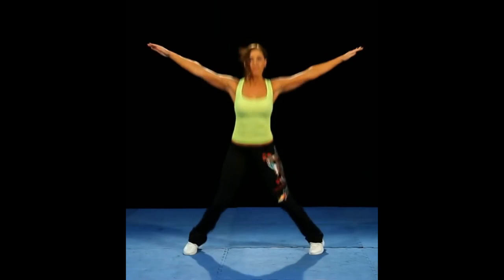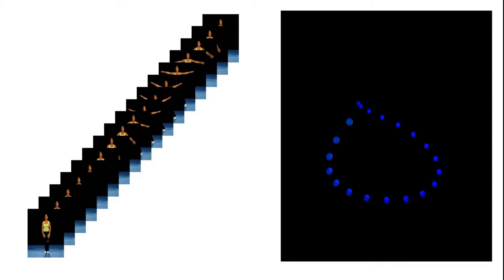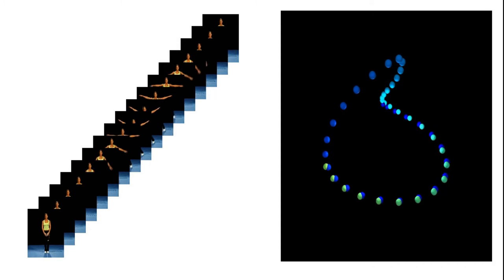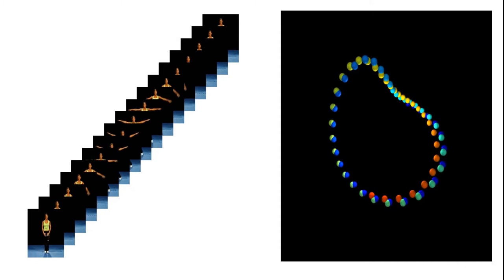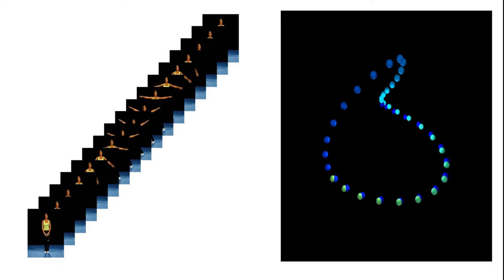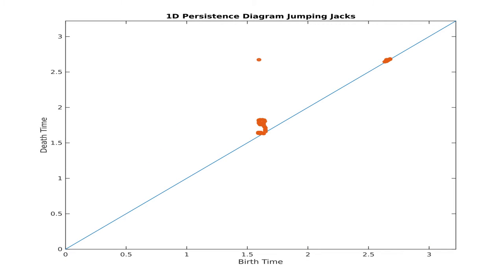Let's look at an example. Here's a video of a woman doing jumping jacks. And here's the sliding window embedding of that video, with 3D PCA displayed to the right. In this example, only 13.6% of the variance is explained by 3D PCA. Yet with our topological tools, we see that indeed there is a strong 1D persistence class corresponding to a cycle.